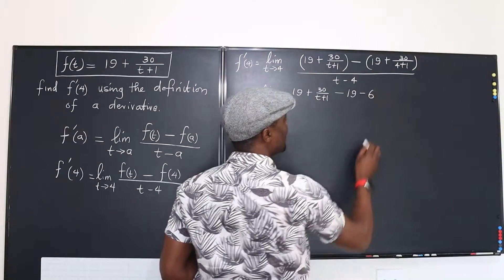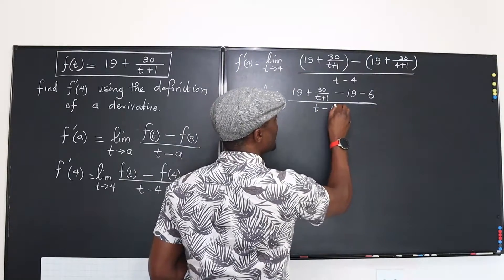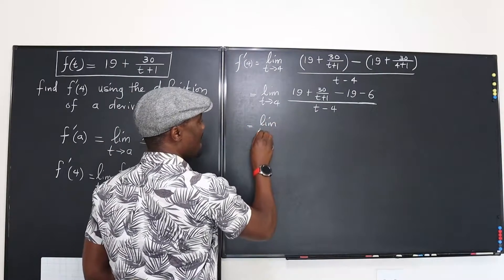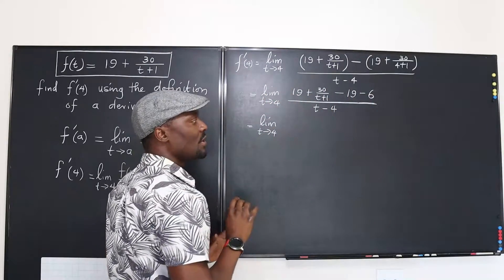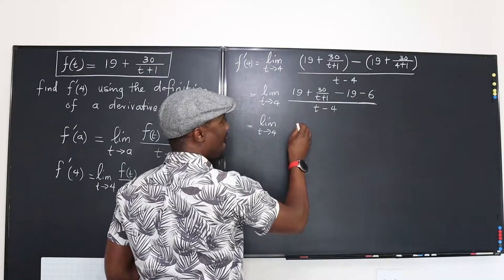So we're going to just write 6 and we'll divide all of that by t minus 4. The next line is going to be the limit as t goes to 4. When you take care of what's on top here, what you're going to notice is that 19 takes away 19 and you have this.